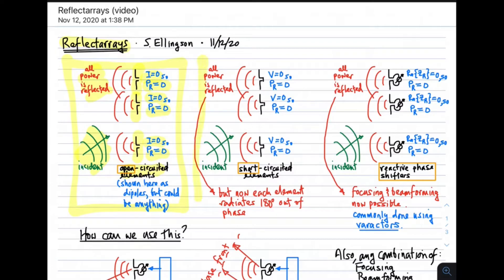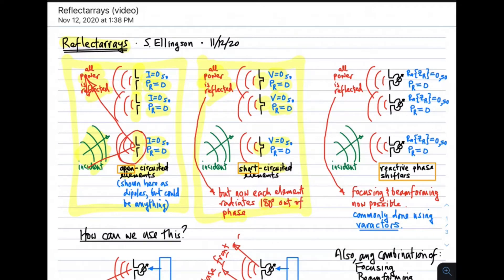We could consider a second case, which I show in the middle here. In the second case, the only difference is that the terminals of each antenna element are short-circuited. Now when they're short-circuited, the voltage across the terminals is zero. So once again, no antenna can accept power, and all power is scattered. The difference between these two cases is that there is a 180-degree phase shift. If you consider the phase of a wave scattered by an open-circuited antenna and compare it to the phase scattered by the same antenna when short-circuited, you will see this 180-degree phase shift.